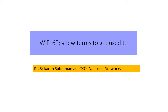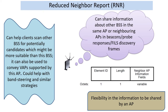Hi, as Wi-Fi in 6 gigahertz, also popularly referred to as Wi-Fi 6E, gets to become a reality, I thought we could get to know a few things which are likely to appear in products. My name is Srikant and I am with Nanocell Networks. Remember that in 6 gigahertz we have a greenfield spectrum where we are going to start with 11ax, and several things which have been done to potentially increase efficiency of WLANs could be introduced here.